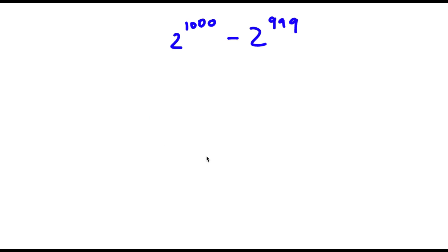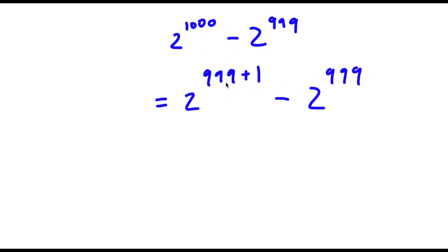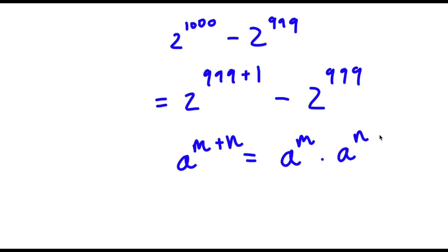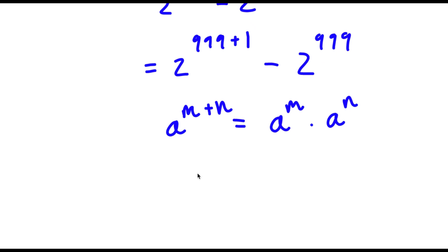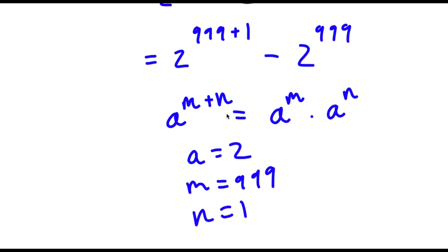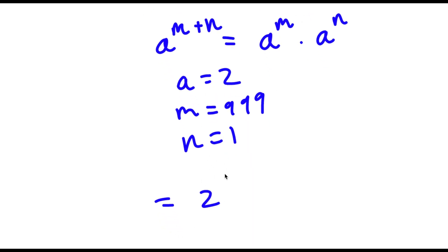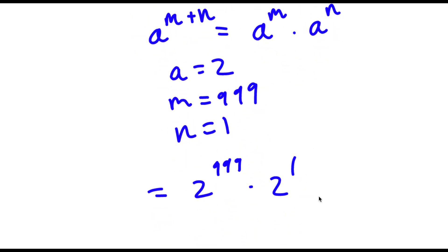Alright, so I have 2 to the power of 1,000 minus 2 to the power of 999. To solve this problem, I'm going to first rewrite 2 to the power of 1,000 as 2 to the power of 999 plus 1, minus 2 to the power of 999. So 1,000 I just rewrote as 999 plus 1. Now if I have something in the form a to the power of m plus n, this is the same thing as a to the power of m times a to the power of n. So 2 to the power of 999 plus 1 equals 2 to the power of 999 times 2 to the power of 1. And now I have this minus 2 to the power of 999.